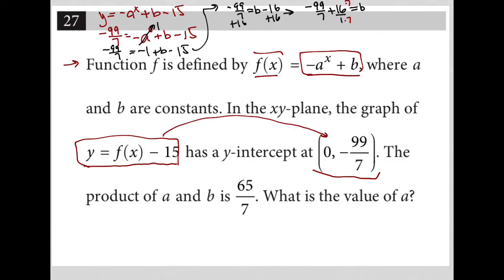16 times 7, I typed that in my calculator wrong, is 112. So this would become negative 99 over 7 plus 112 over 7 is equal to b. Negative 99 plus 112 is 13, so this becomes 13 over 7 is equal to b.